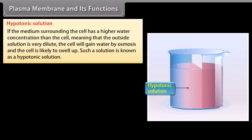Hypotonic solution: If the medium surrounding the cell has a higher water concentration than the cell — meaning the outside solution is very dilute — the cell will gain water by osmosis and is likely to swell up. Such a solution is known as a hypotonic solution.